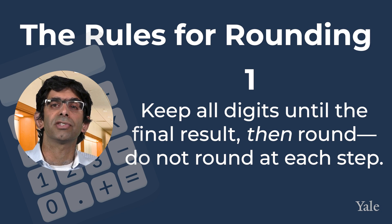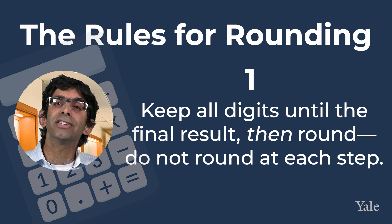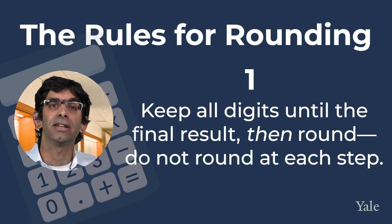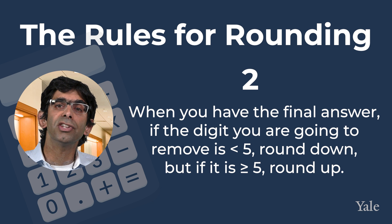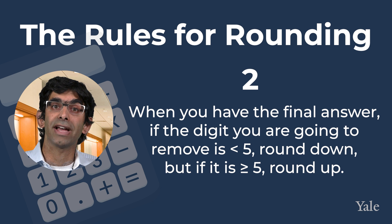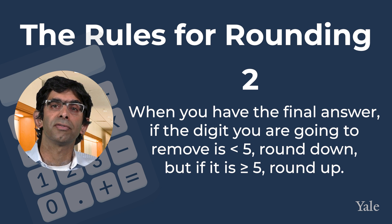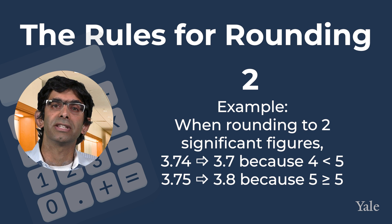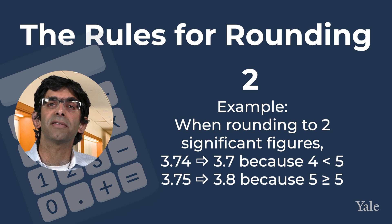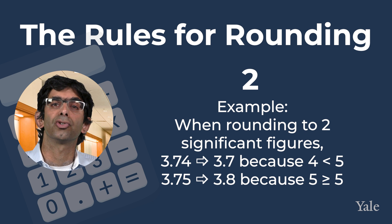When we obtain our final answer, we may need to round it to have the correct number of significant figures. The rules for rounding are as follows. First, keep all digits until the final result and then round. Until you get to the final answer in your calculator, it is fine to keep working with the full numbers. Do not round at each step. Second, when you have the final answer, if the digit you're going to remove is less than 5, round down, but if it is greater than or equal to 5, round up. For example, 3.74 becomes 3.7 to two significant figures, whereas 3.75 becomes 3.8 to two significant figures.